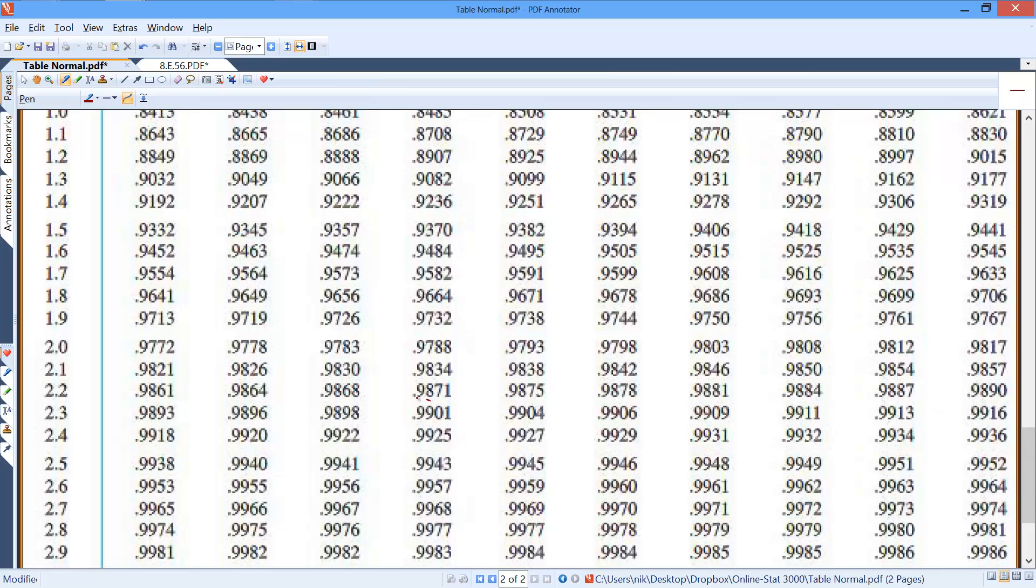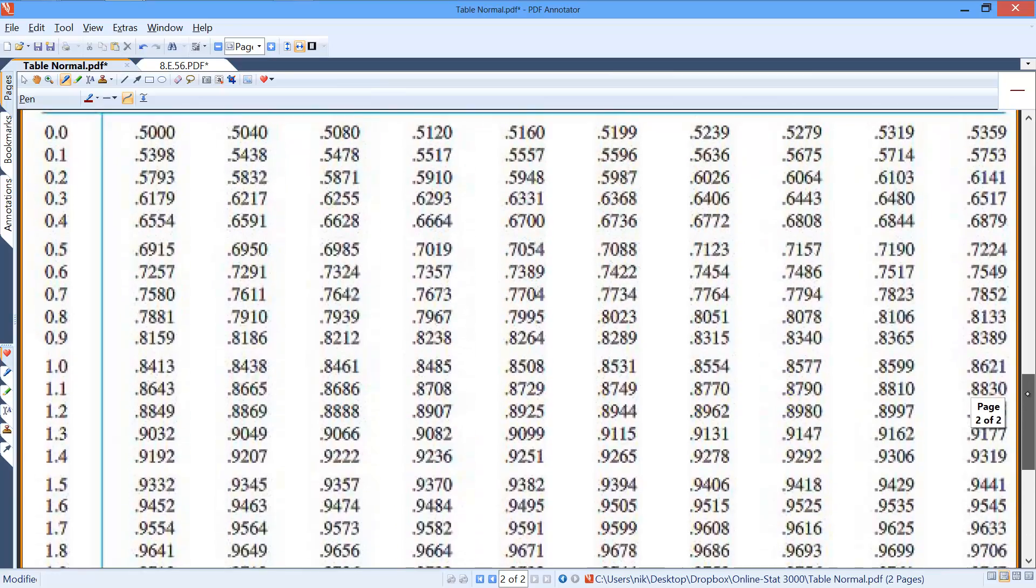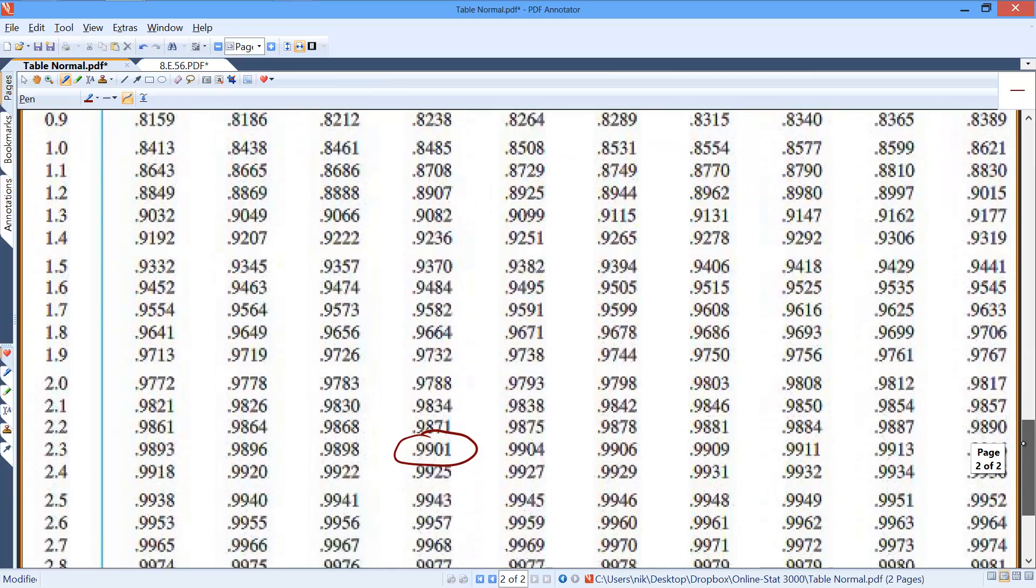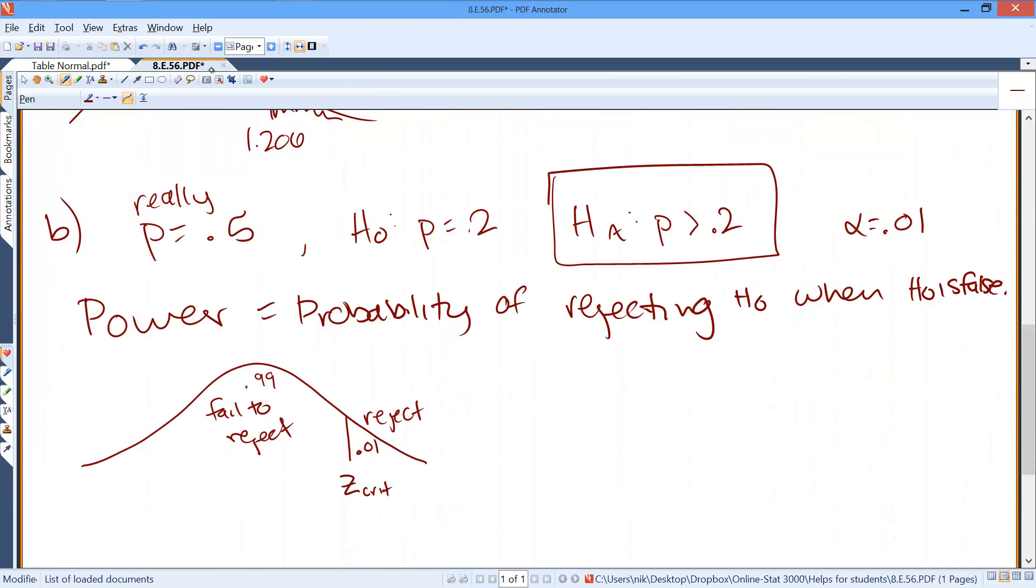Looks like we're pretty close to 2.3, right? So z-critical equals 2.33. So we reject the null hypothesis for z greater than or equal to 2.33.